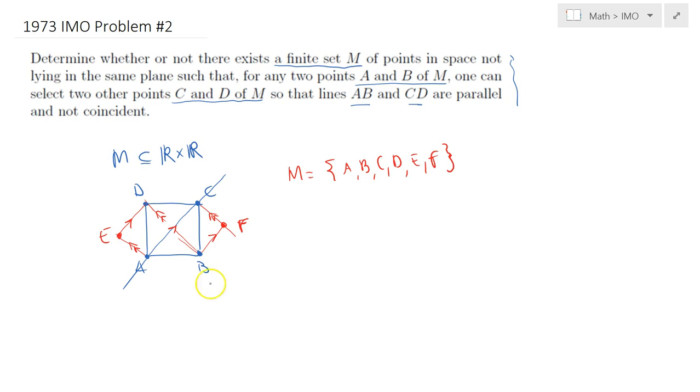I claim that M equals A, B, C, D, E, F provides the desired result. Any time you pick two points, for instance AB, then you can find CD. If you pick AC, then you can find ED. If you pick AF, then you can find CE, and so on. It's quite clear and obvious.